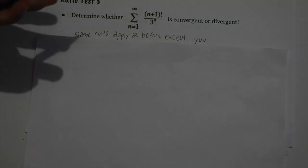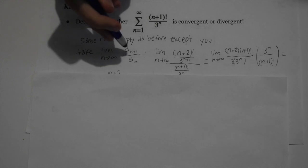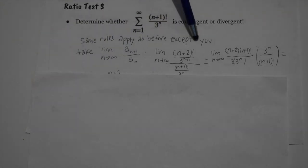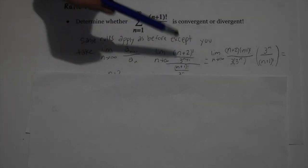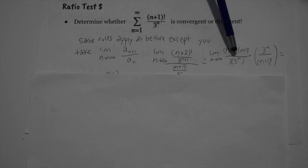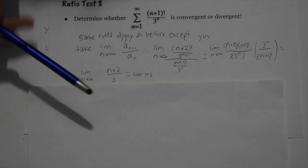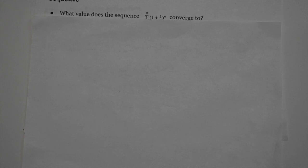The ratio test works similarly — we take the limit as n approaches infinity of |a_{n+1}/a_n|. We plug in n+1, getting (n+2)! / 3^{n+1} over the original term. We separate (n+2)! into (n+2)·(n+1)! and 3^{n+1} into 3·3^n, then cancel. We get the limit as n approaches infinity of (n+2)/3, which equals infinity. Since infinity > 1, it diverges by the ratio test.